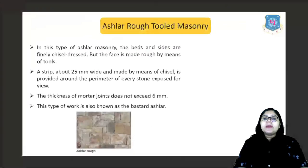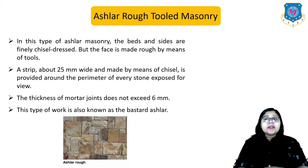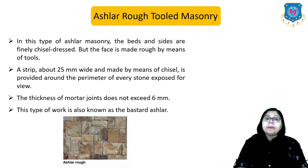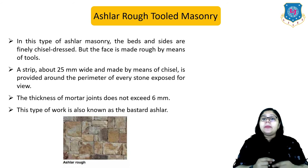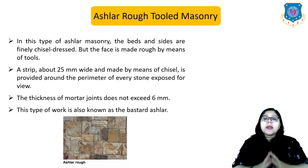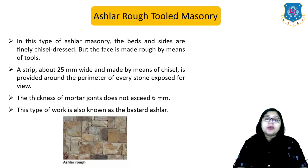The next type is ashlar rough tooled masonry. In this type, the beds and sides are finely chisel-dressed but the face is made rough by means of tools. A strip about 25 mm wide made by chisel is provided around the perimeter of every stone exposed for view. The thickness of mortar joints does not exceed 6 mm. This type of work is also known as bastard ashlar.